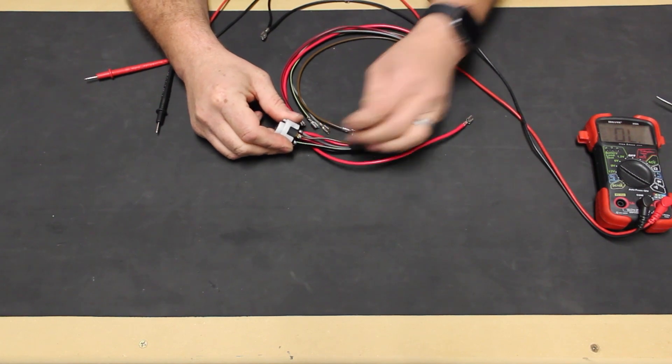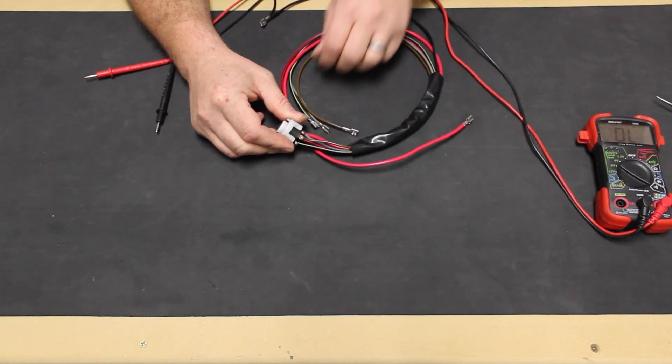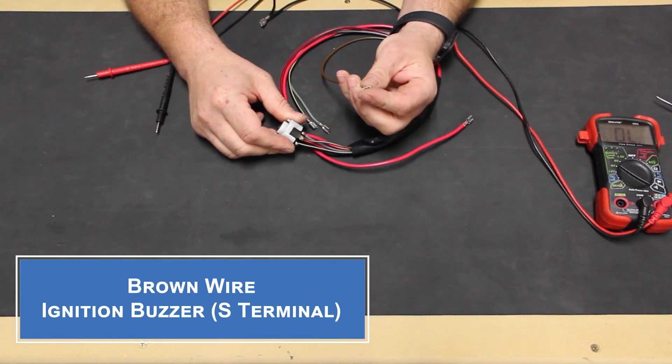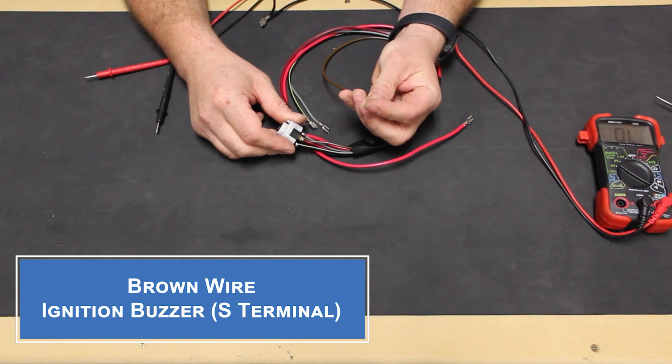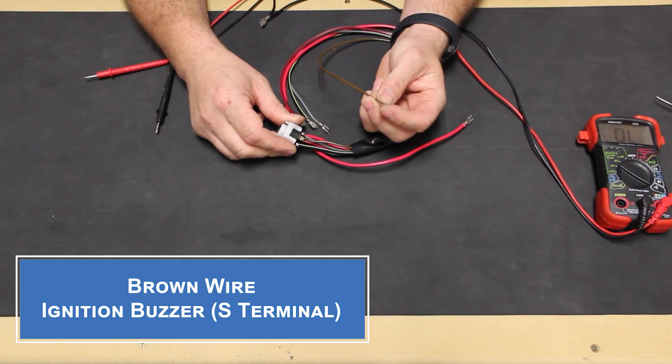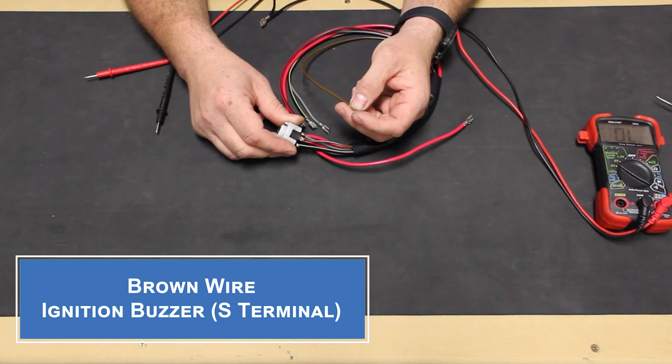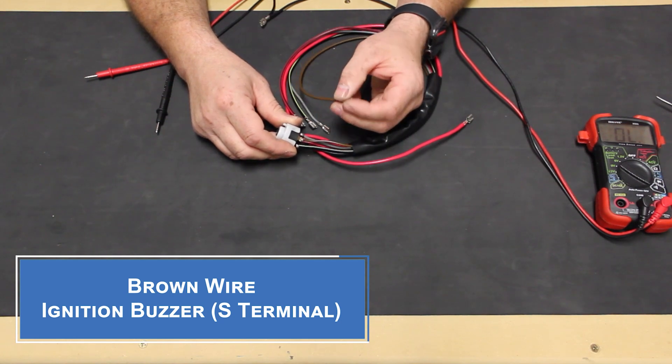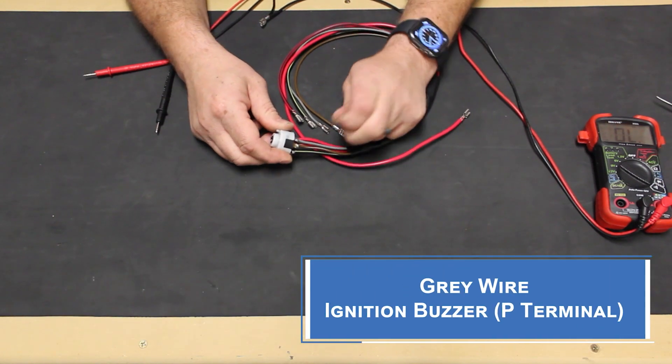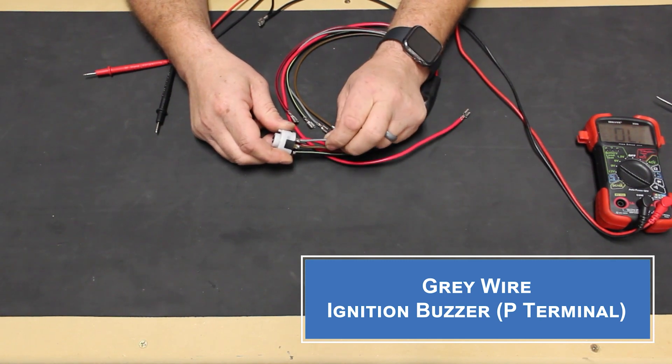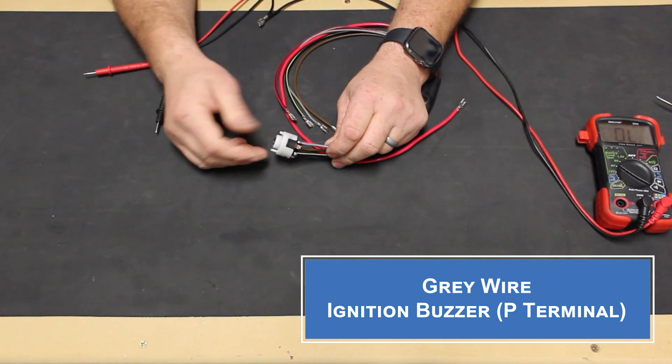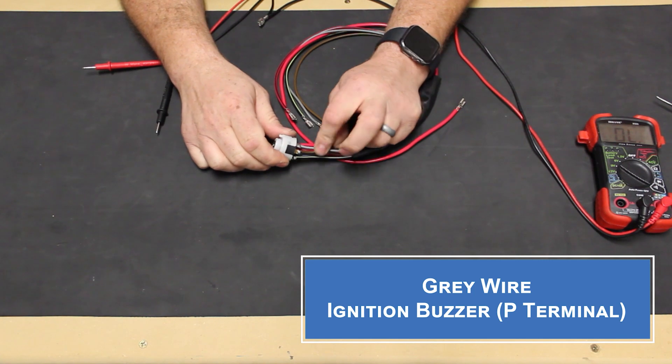VW started using a buzzer as early as 1968 in some models. The brown wire attaches to the S terminal and actually connects to a small metal tab inside the switch that activates when the key slides in place. This would provide a ground signal for the door buzzer system. The gray wire attaches to the P terminal and only has power at the off position, providing power for the door buzzer system.